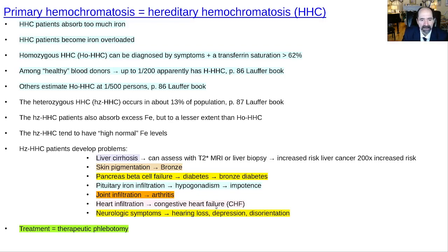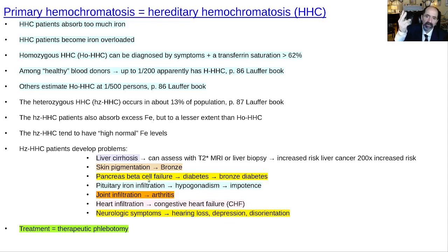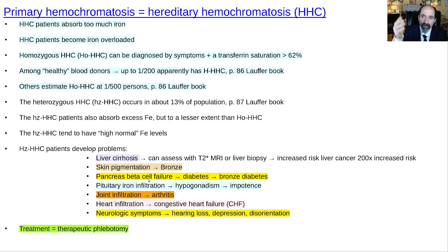Getting back to the pancreas: beta cells are being destroyed by a high fat diet — that's one major problem. They're also destroyed by oils undergoing lipid peroxidation. And now you're also destroying beta cells from eating meat with high iron, or from fortified processed foods. Think of these as synergistic poisons — meat, vegetable oils, and processed food all contributing to progressive organ damage.